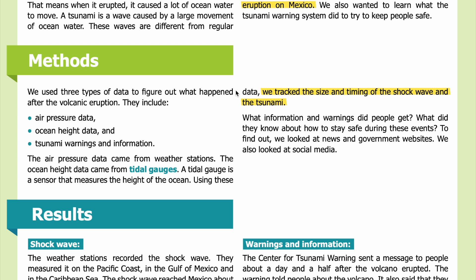Methods: We used three types of data to figure out what happened after the volcanic eruption — air pressure data, ocean height data, and tsunami warnings and information. The air pressure data came from weather stations. The ocean height data came from tidal gauges, which are sensors that measure the height of the ocean. Using these data, we tracked the size and timing of the shock wave and the tsunami. To find out what warnings people received, we looked at news and government websites and social media.